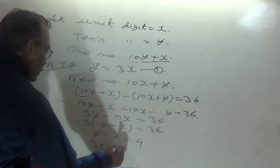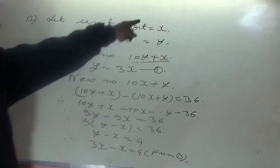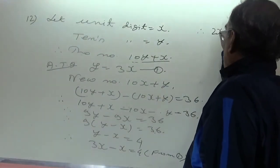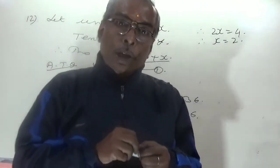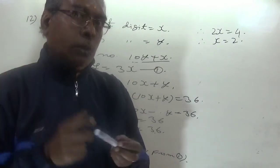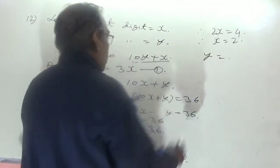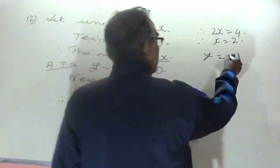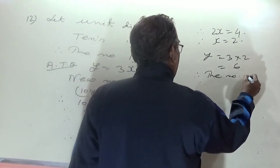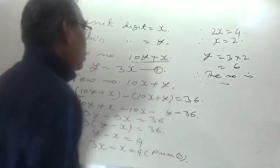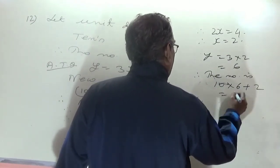Substituting y = 3x from equation 1 into y − x = 4: 3x − x = 4, so 2x = 4, therefore x = 2. Then y = 3 × 2 = 6. The number is 10y + x = 10(6) + 2 = 62.